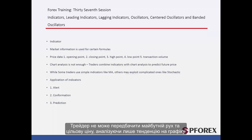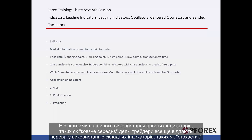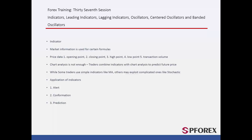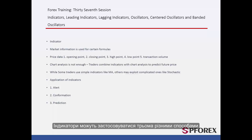A trader cannot predict the future movement and target price by only analyzing trend on a chart, so he or she must exploit indicators as an instrument to see the future trend of a market. Despite the widespread use of simple indicators such as moving average, some traders still prefer to exploit complicated indicators like stochastic. Indicators may be applied in three different ways.